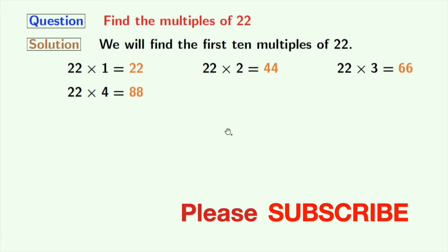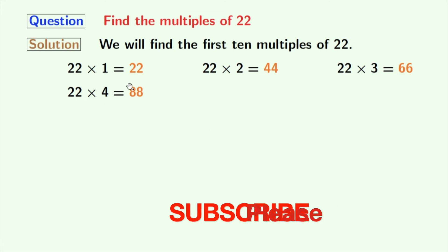22 times 4 gives us 88. 22 times 5 gives us 110. 22 times 6 gives us 132.